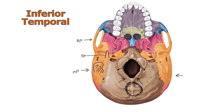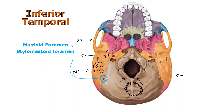The mastoid foramen makes sense near the mastoid process — there it is. The stylomastoid foramen is a hole between the styloid process and the mastoid process — right there.